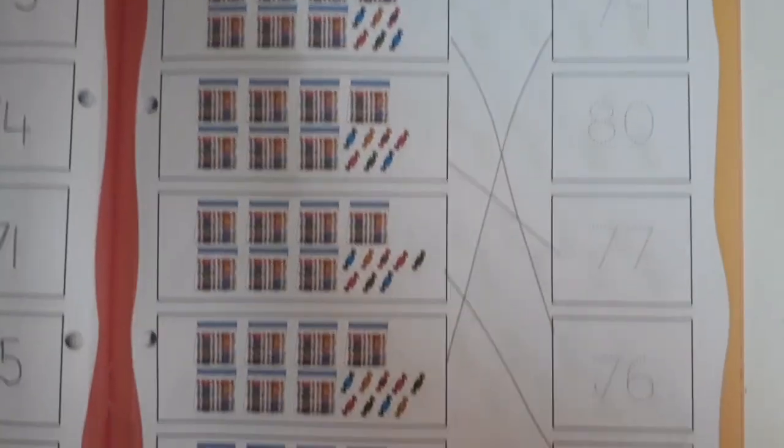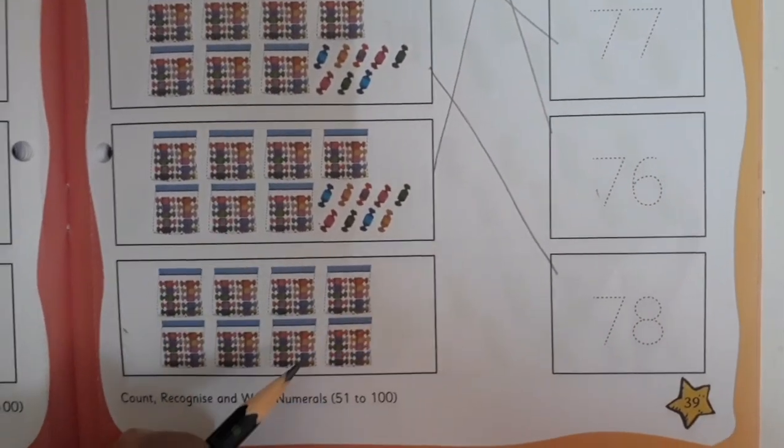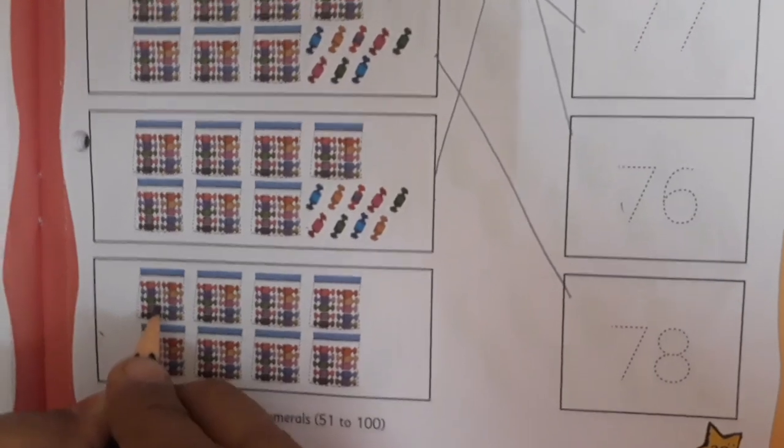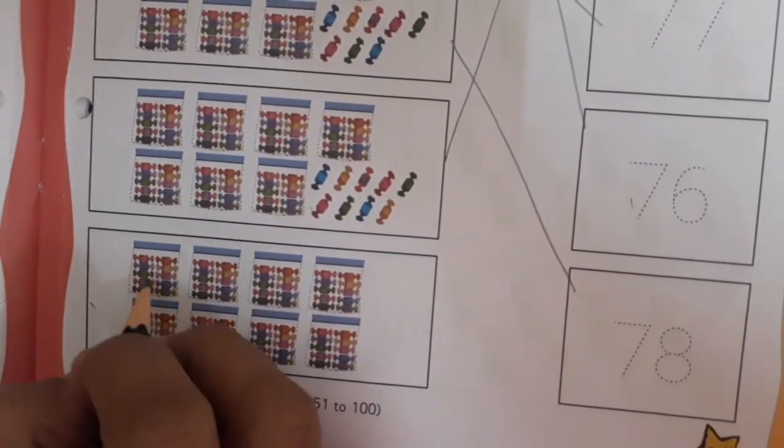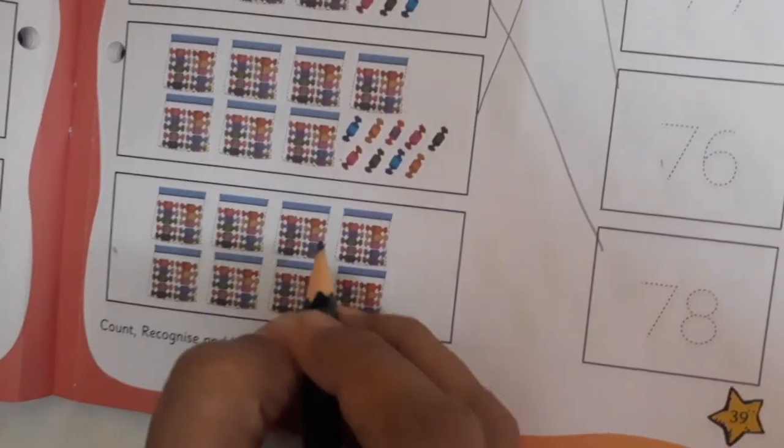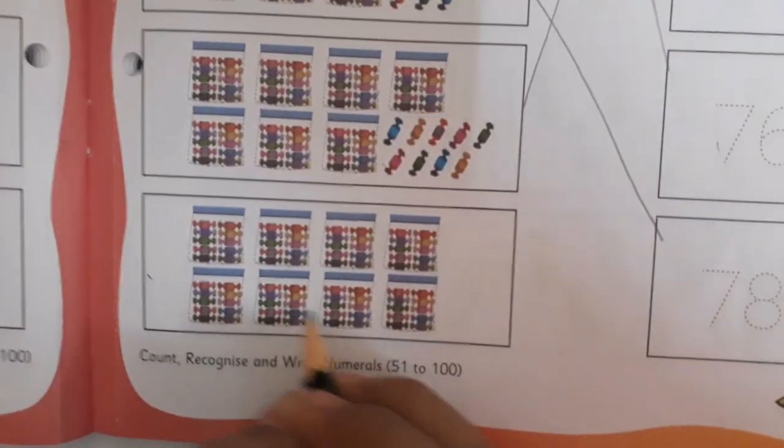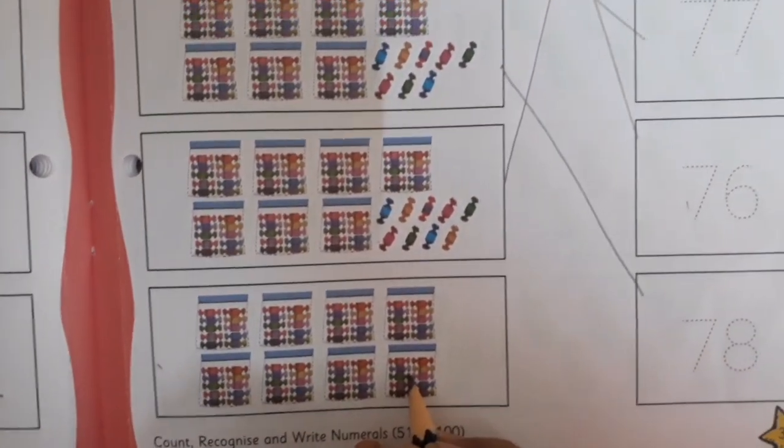Now here you can see there are no more chocolates. So let's count the number of packets. It's skip counting by 10. We will do 10, 20, 30, 40, 50, 60, 70, and 80.